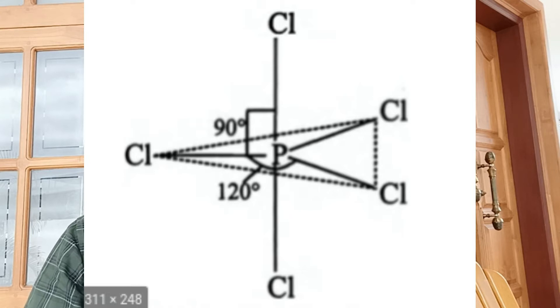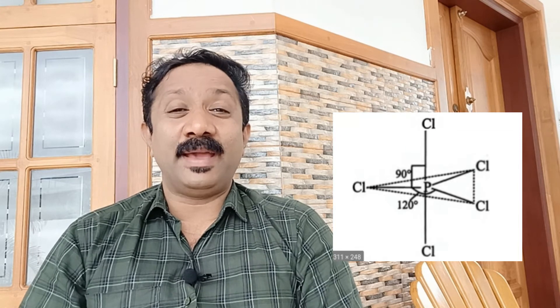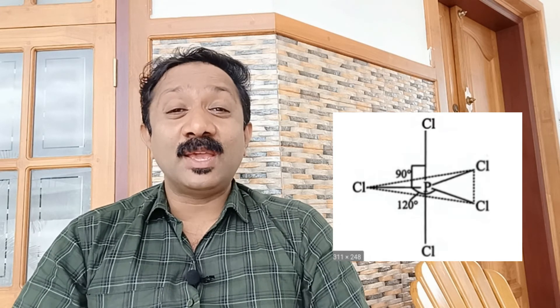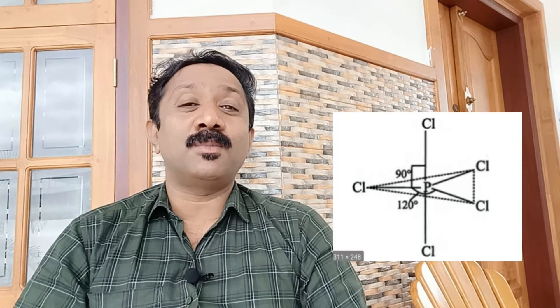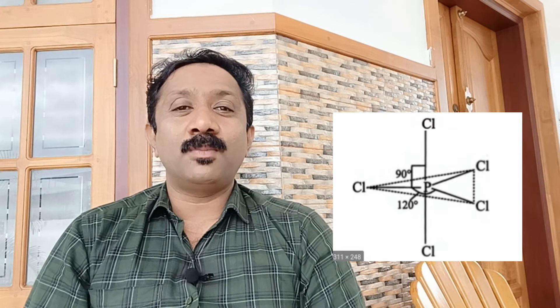The 90 degree repulsion involves the halogen. The axial bond consists of 2 P-Cl bonds. The axial bond is longer than the equatorial bond in PCl5. The 2 axial bonds have a length longer than the equatorial bond. That is the trigonal plane.